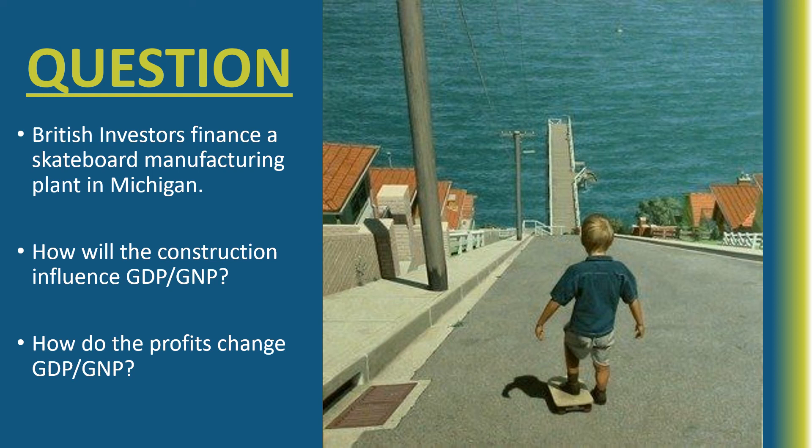When it comes to GNP, however, GNP goes up only in the case of the construction. It's fairly safe to assume that the construction involves United States citizens who are building the plant in Michigan. So if we have US citizens building this plant, GNP is going to go up because of the construction.